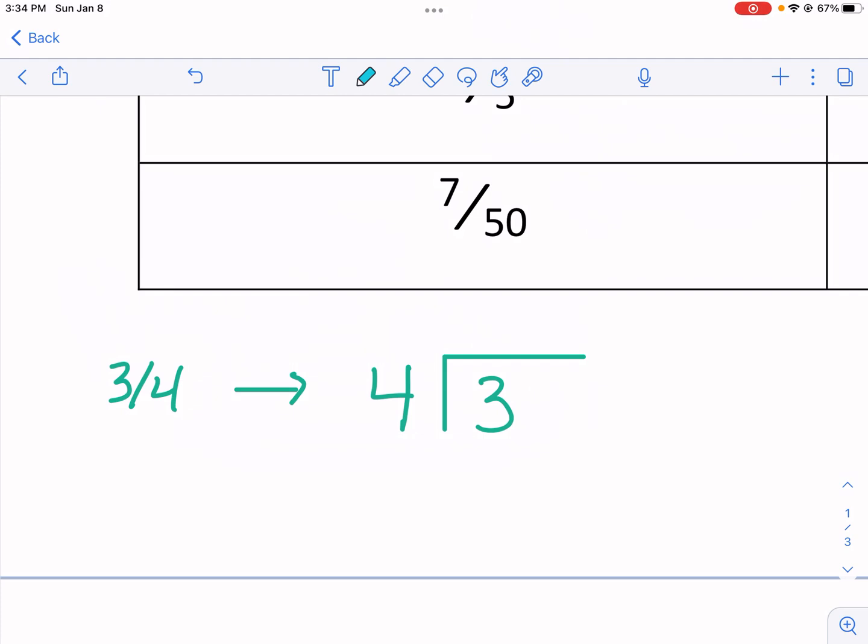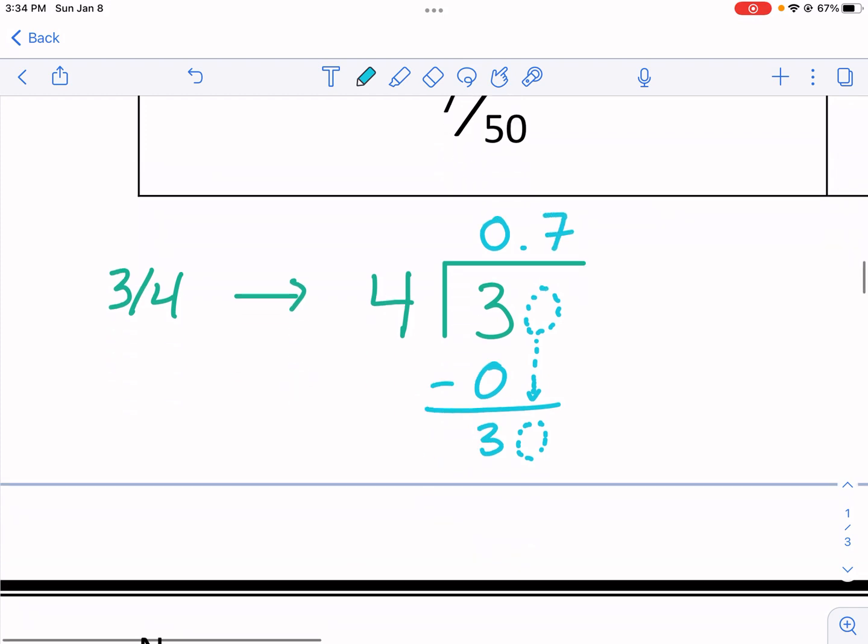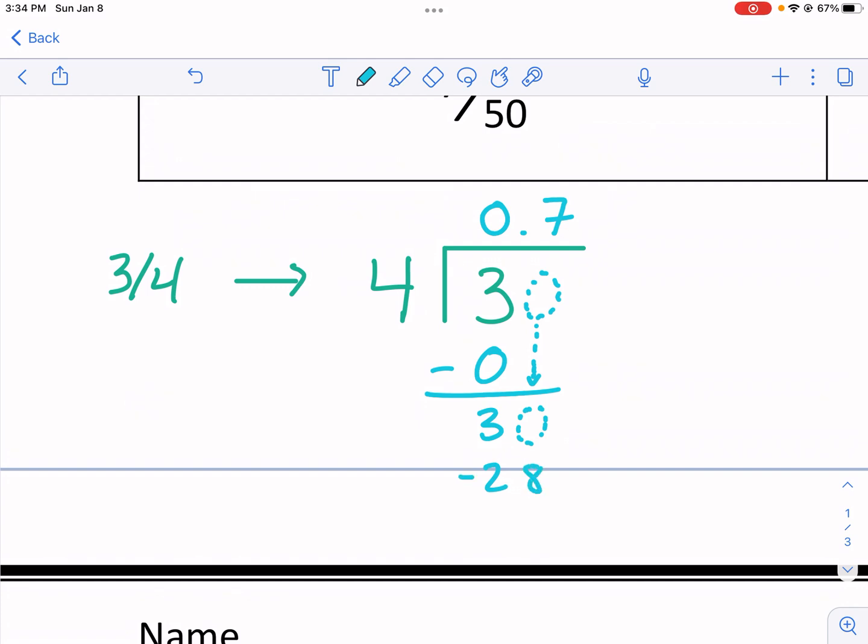But the bottom line is this is the process. We try to see how many times four goes into three. It goes in zero times. Three is not a multiple of four. The only thing we can do is get close to it by doing four times zero. And that's of course zero. We find out what the remainder is and it's three. But what we want to do is we want to figure out how far we can go before there's no remainder. So I'm going to put a decimal place down.